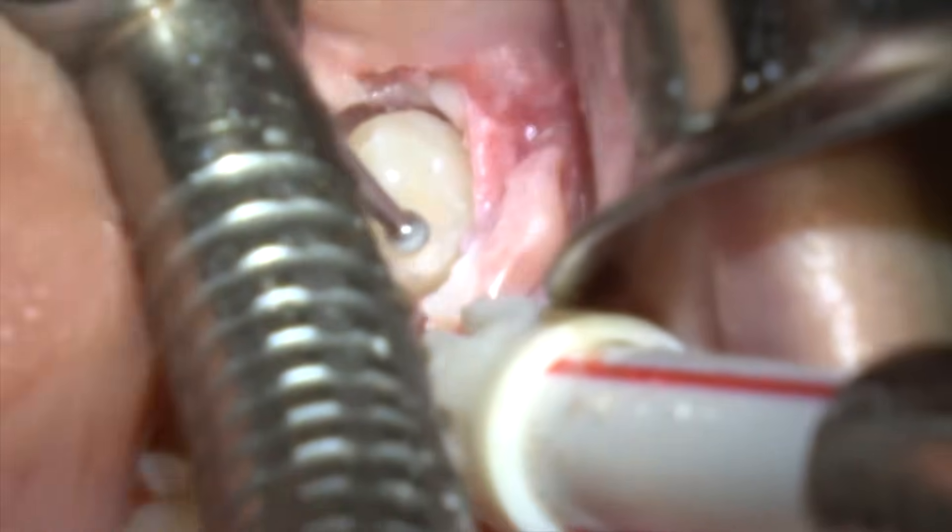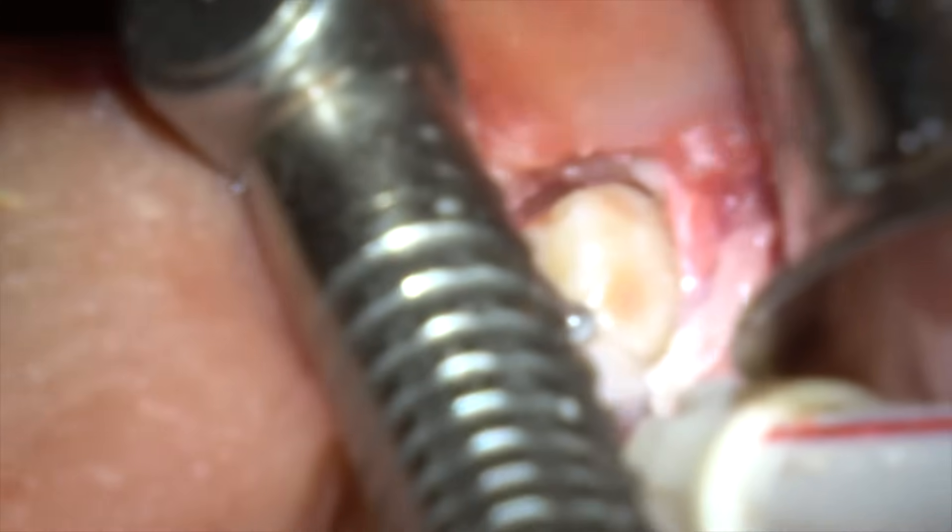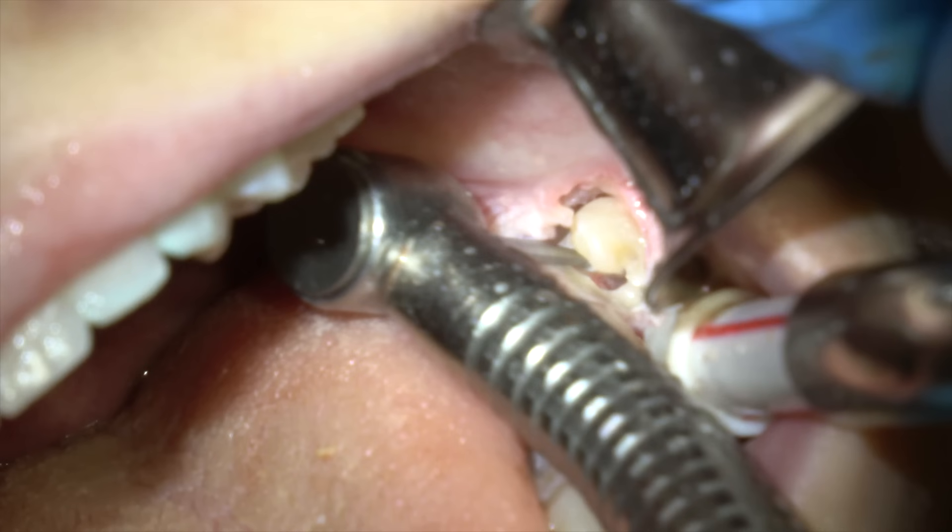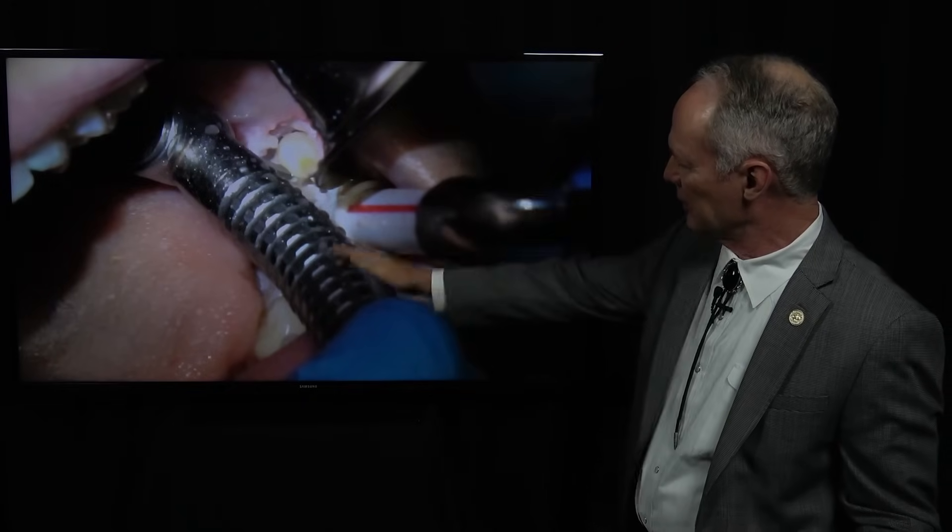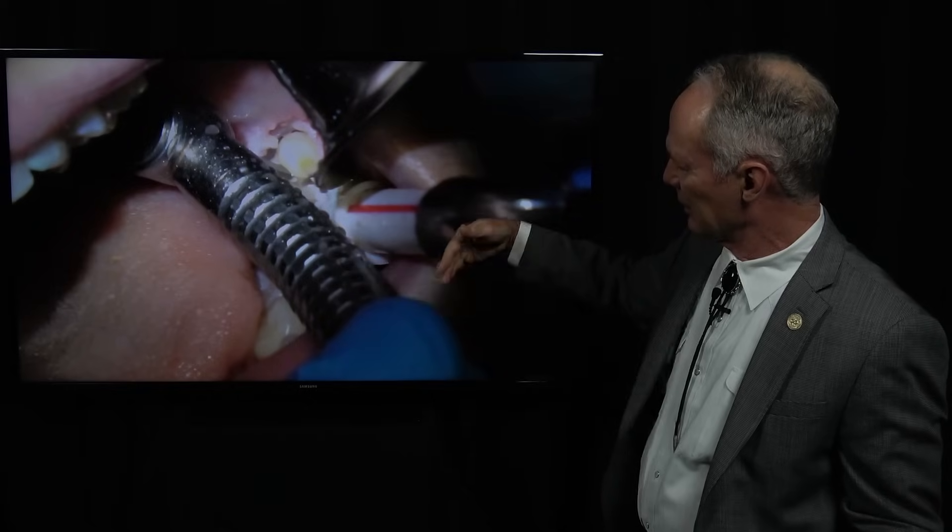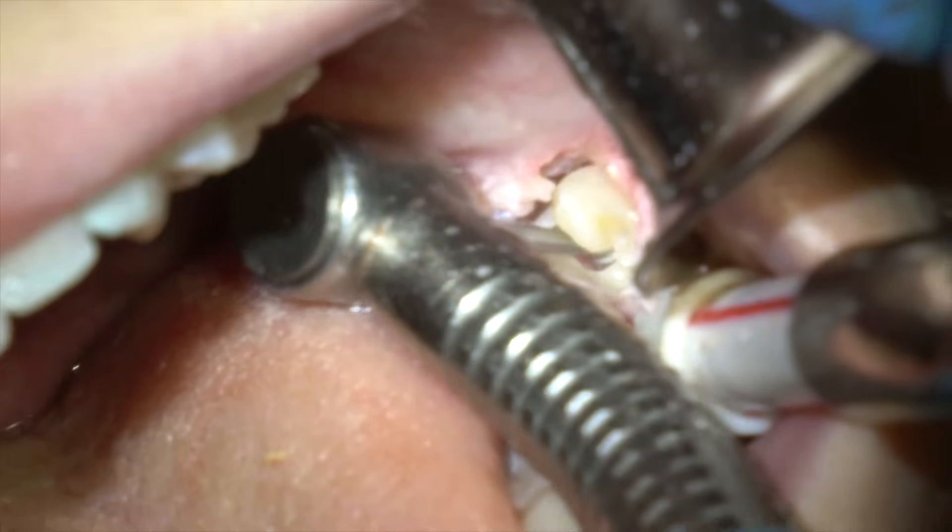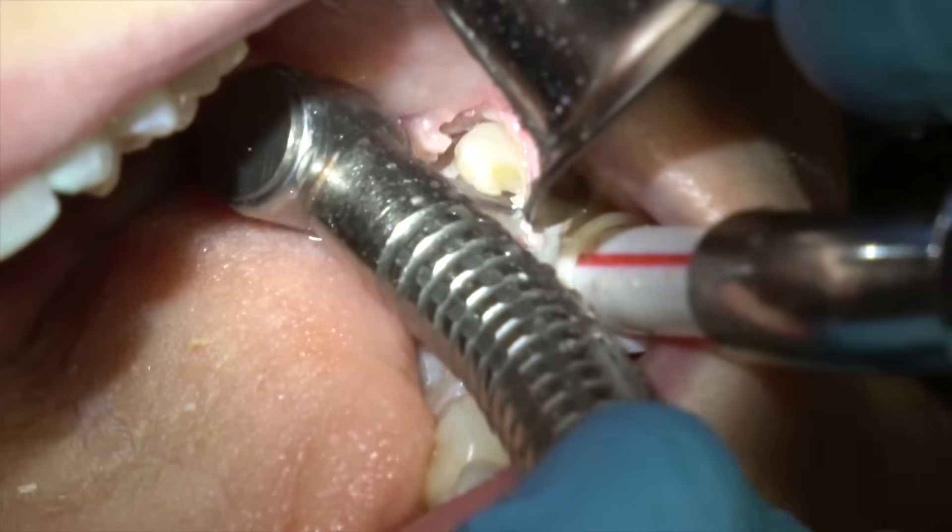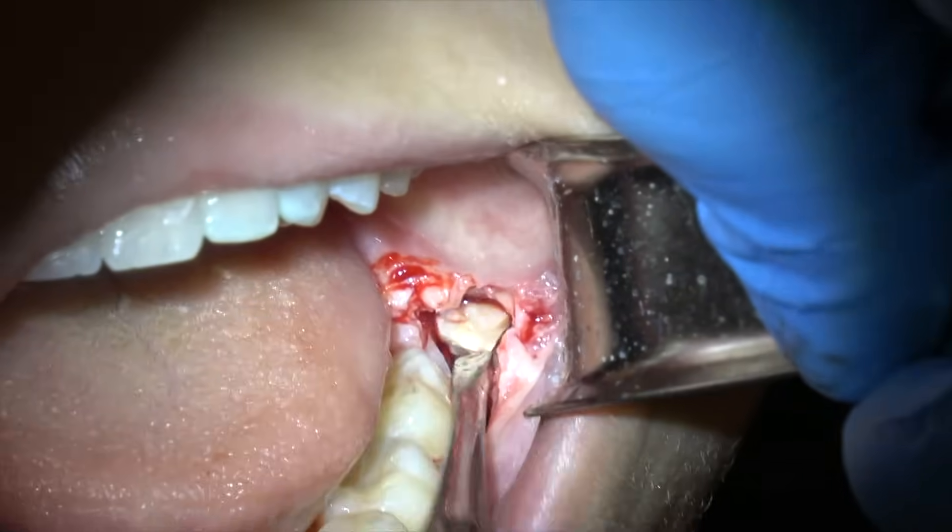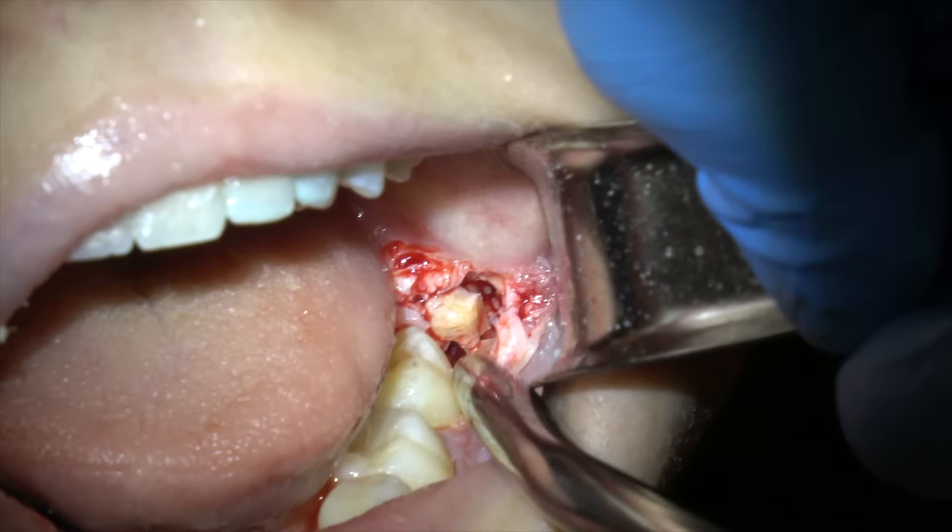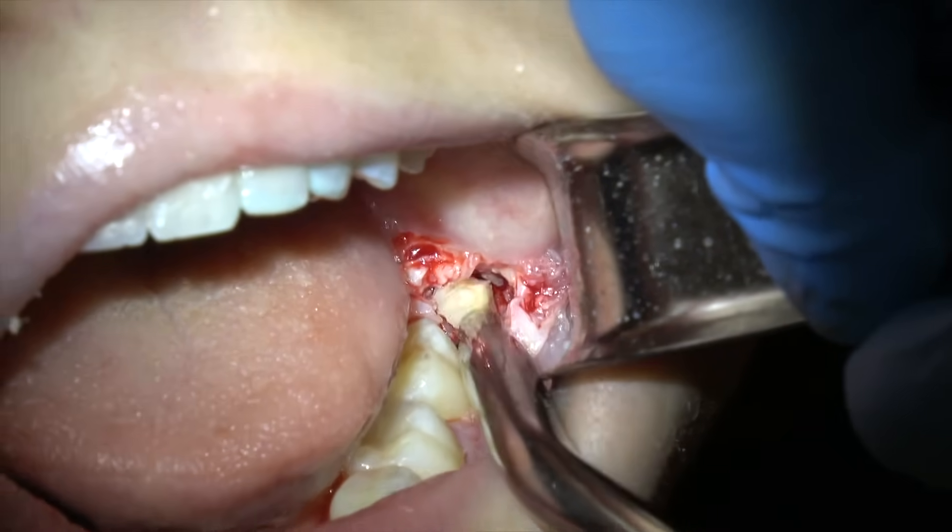So I'm just cutting through the mesial part of the tooth. Now I'm separating the buccal root from the lingual root—the mesial buccal root from the mesial lingual root. I'm going to take them out in two parts. And this is just an elevator. I'm just separating the parts.